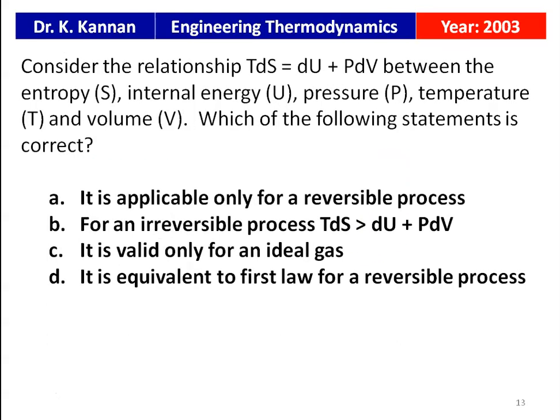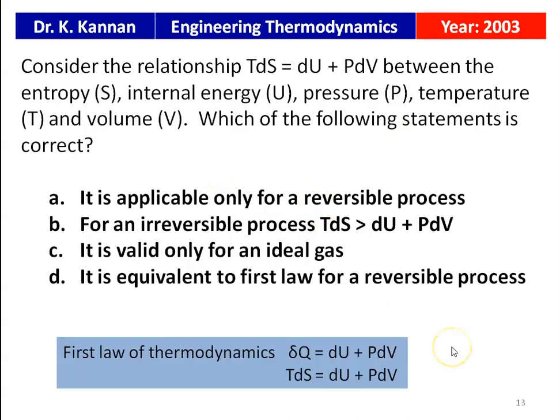From the 2003 question paper: consider the relationship TdS = dU + PdV. Which statement is correct? The correct answer is option D — it is equivalent to the first law for a reversible process, since δQ = dU + PdV and δQ = TdS, therefore TdS = dU + PdV.